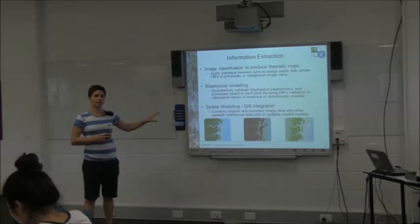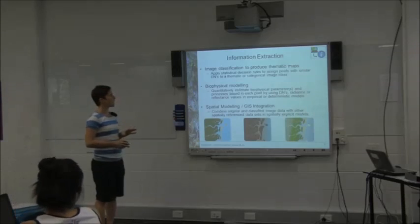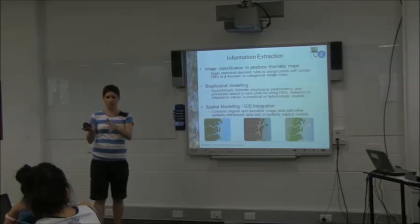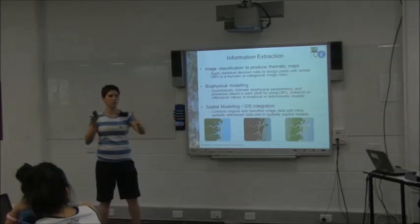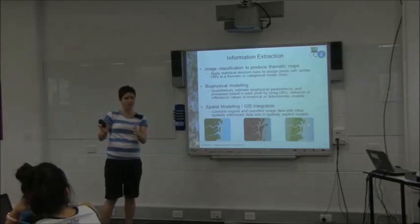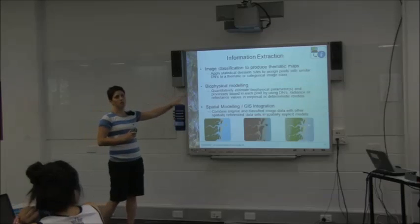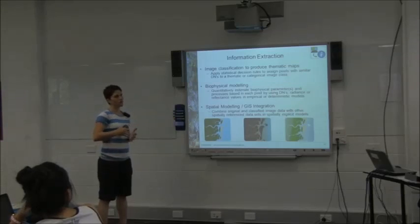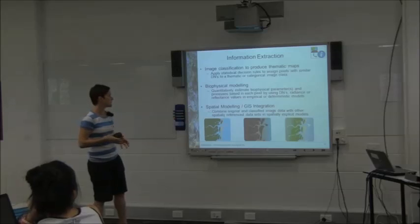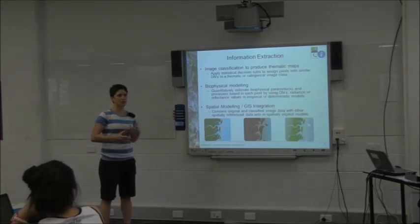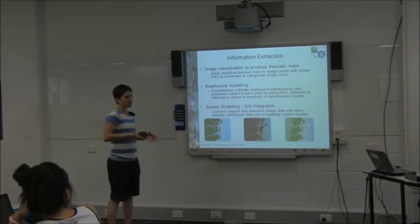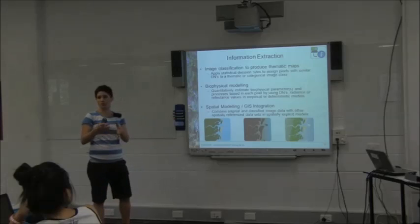There are three main areas for remote sensing information extraction: image classification and thematic maps, which involve hard boundaries between individual classes like forest versus water; biophysical modelling, which looks at quantitative mapping to estimate biophysical properties based on pixel values rather than giving hard boundaries; and spatial modelling and GIS integration, which brings other spatial information into models to help guide classifications.